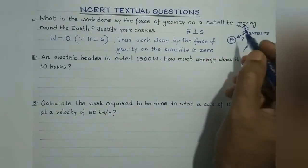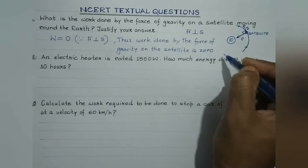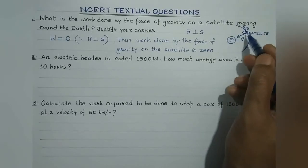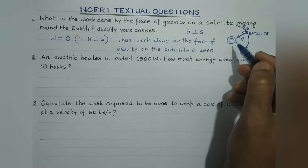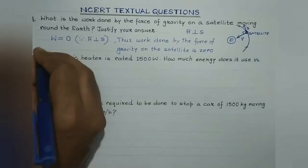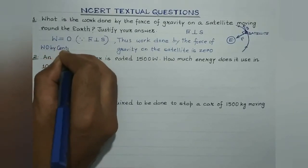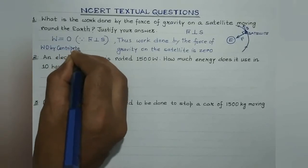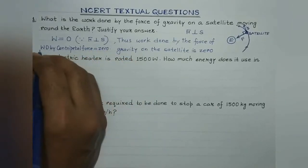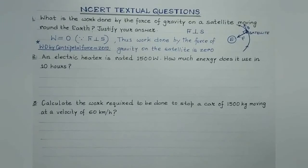One more important point: we have discussed the force which acts in the radially inward direction — that is, the force which makes the body rotate or revolve in a circular path. That is known as the centripetal force. So the nature of this force which acts in the radially inward direction is the centripetal force. From this we can conclude that the work done by centripetal force is always zero. Work done by centripetal force, which always acts in the radially inward direction, is always zero. This is a very, very important concept.